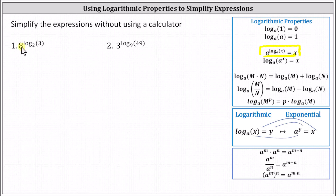In our case, the base of the exponential term is eight and the base of the logarithmic exponent is two, which means we need to change the form of the given expression before we apply the property. To do this, eight is equal to two cubed, which indicates we can write the given expression as two cubed raised to the power of log base two of three.